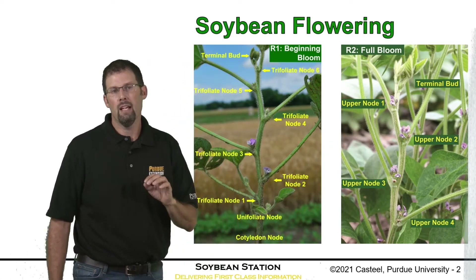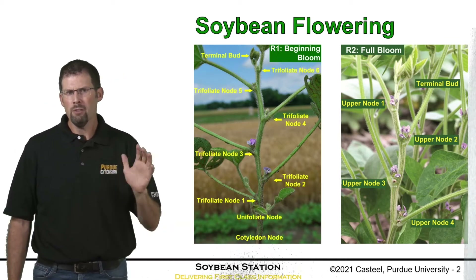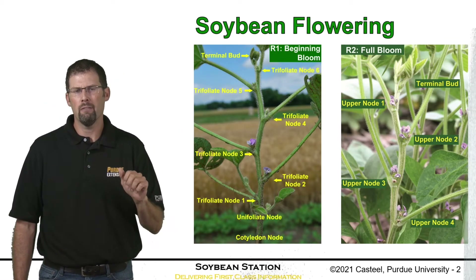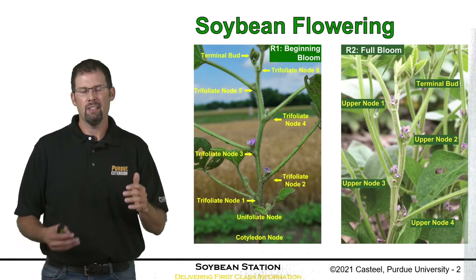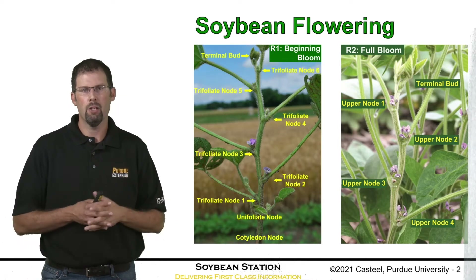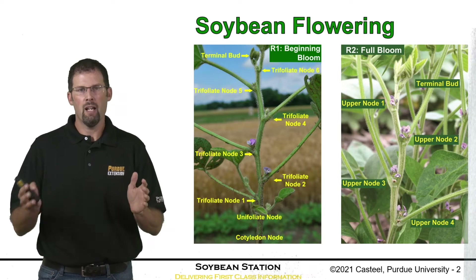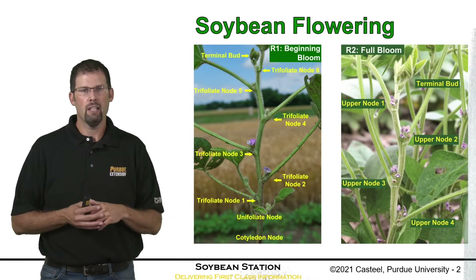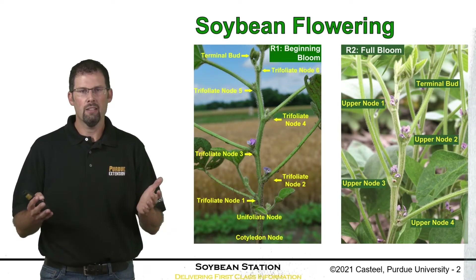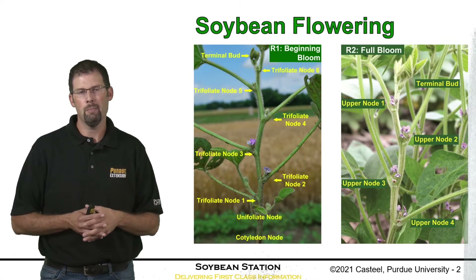At this R2 stage, we've accumulated usually about half of our trifoliate nodes. If we've counted up those nodes and we have 10 nodes, by the end of the season we should have about 20. So this is a nice check for us in the middle of the season — how things are growing and how they're developing.